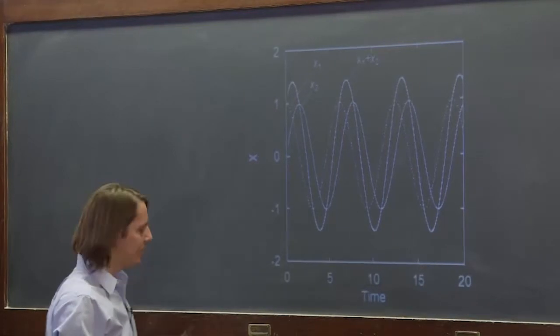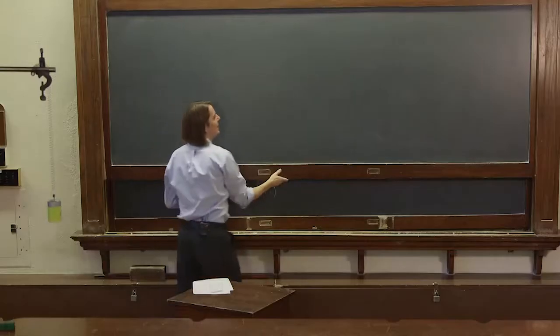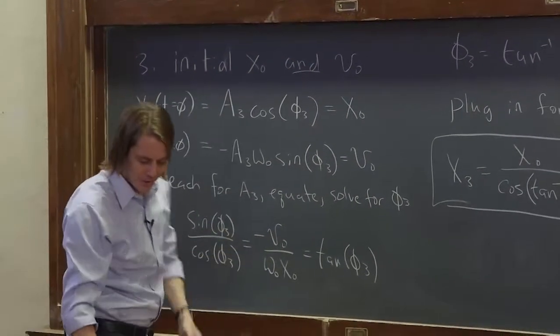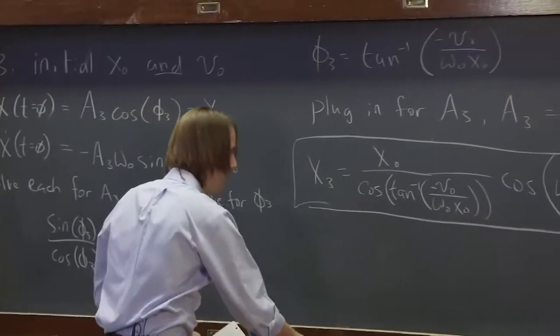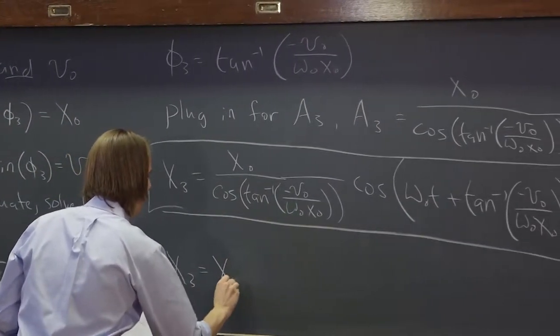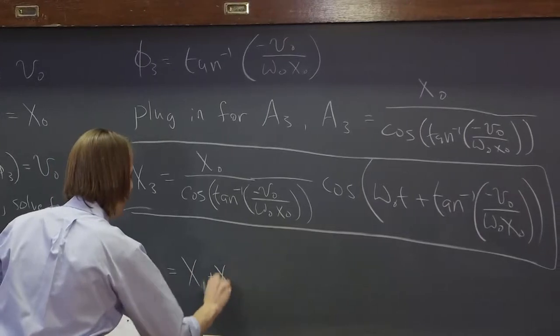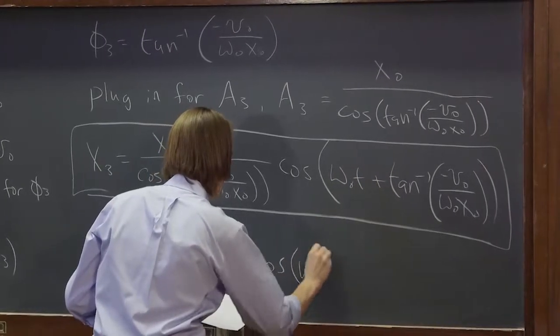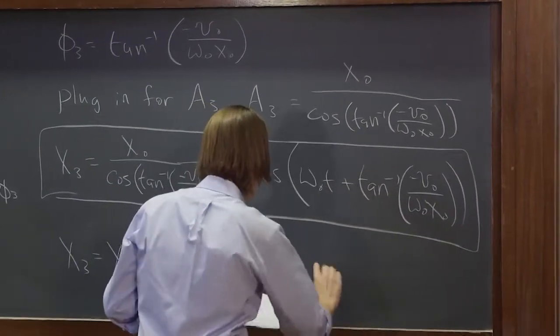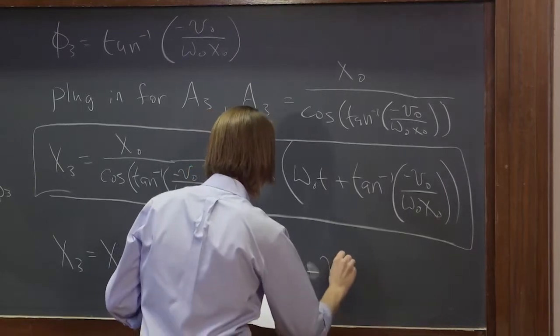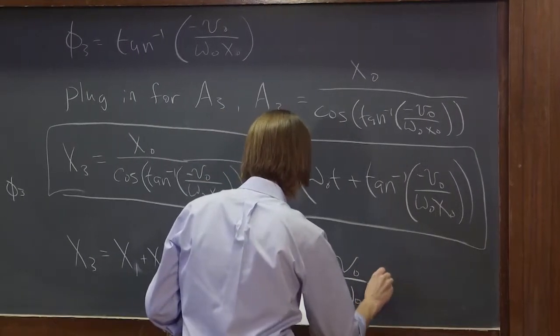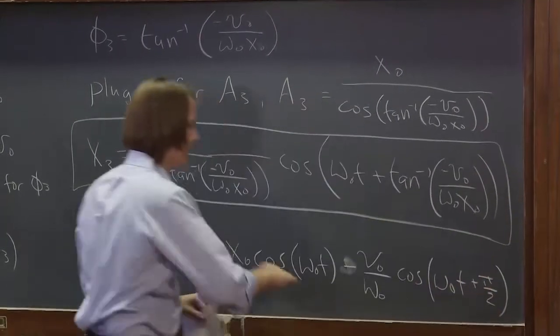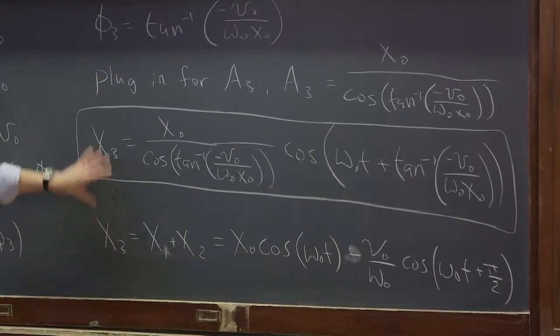So superposition could have saved us all this work to get this. Because we didn't need to do this. All we had to do was add up x0. We could have said x3 equals x1 plus x2, so we could have just said it's x0 cosine omega naught t plus, or actually it would be minus, v naught over omega naught cosine omega naught t plus pi over 2. That's the x1 plus x2 we had before.